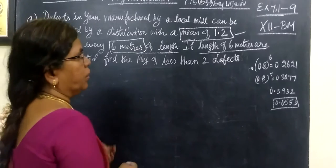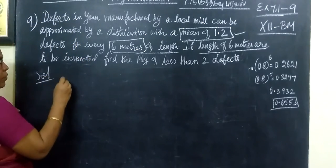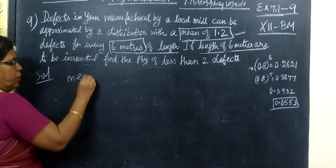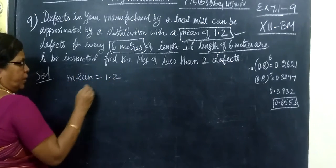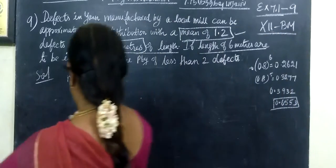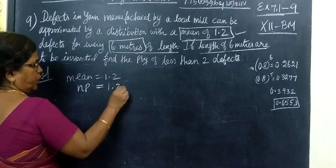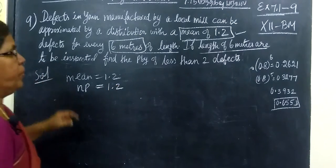Binomial distribution with mean equal to 1.2. The mean formula is np, so np equals 1.2. In binomial distribution, mean equals np, so that equals 1.2.